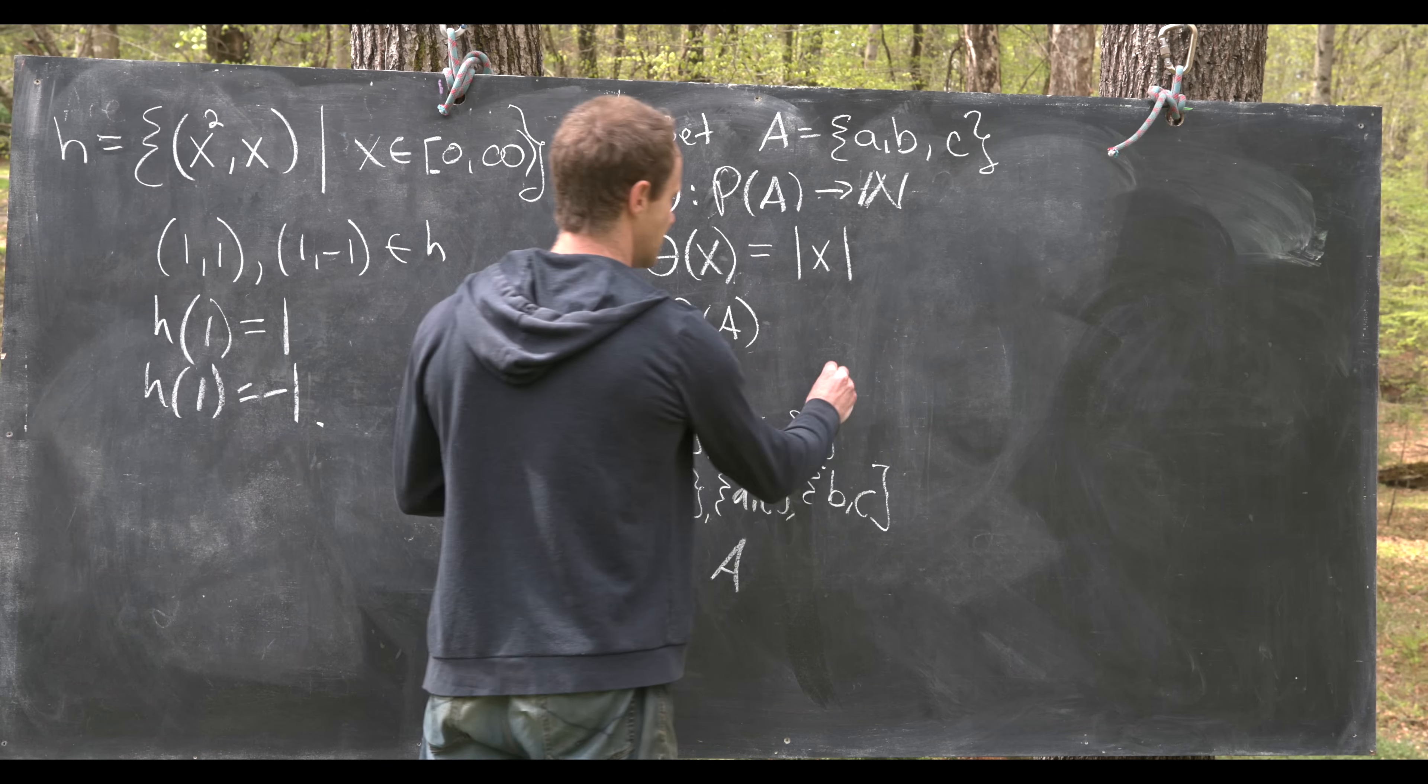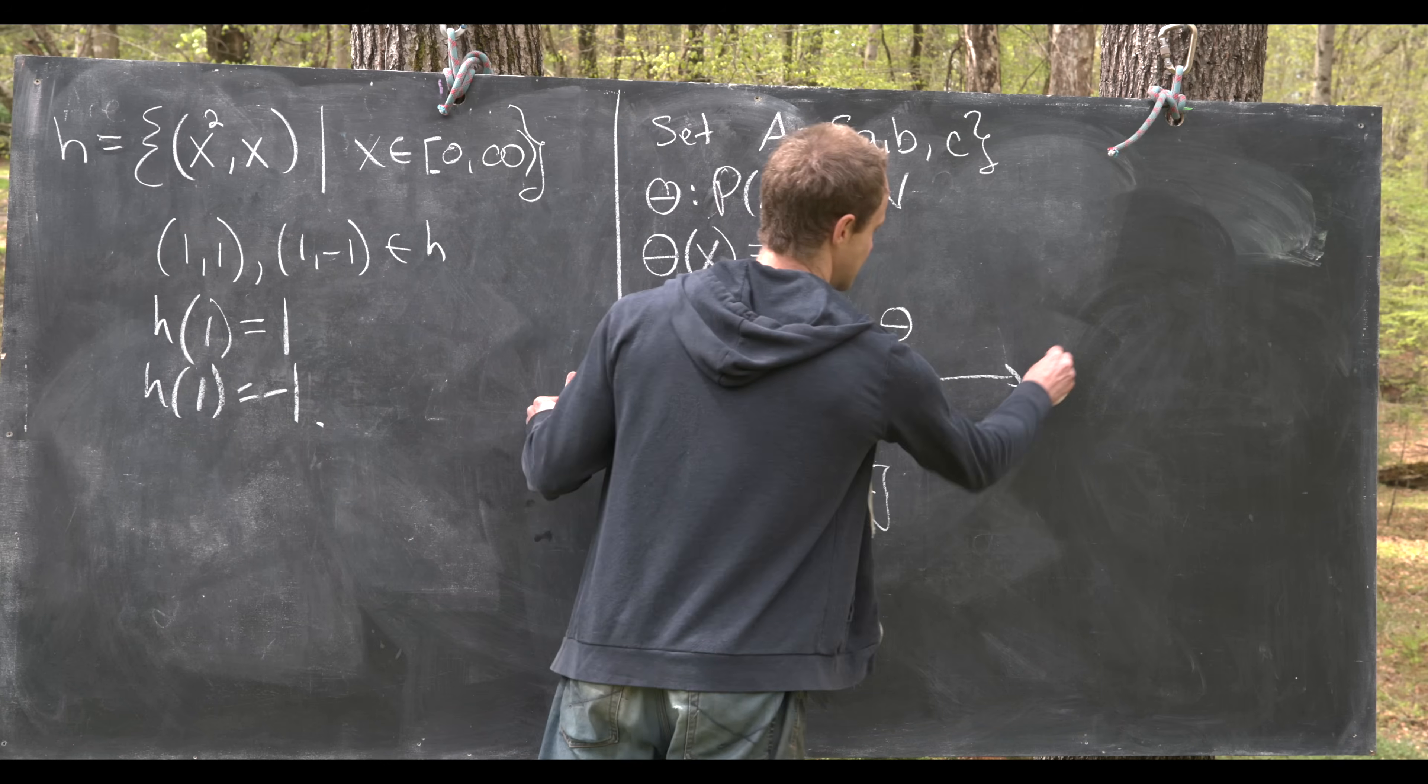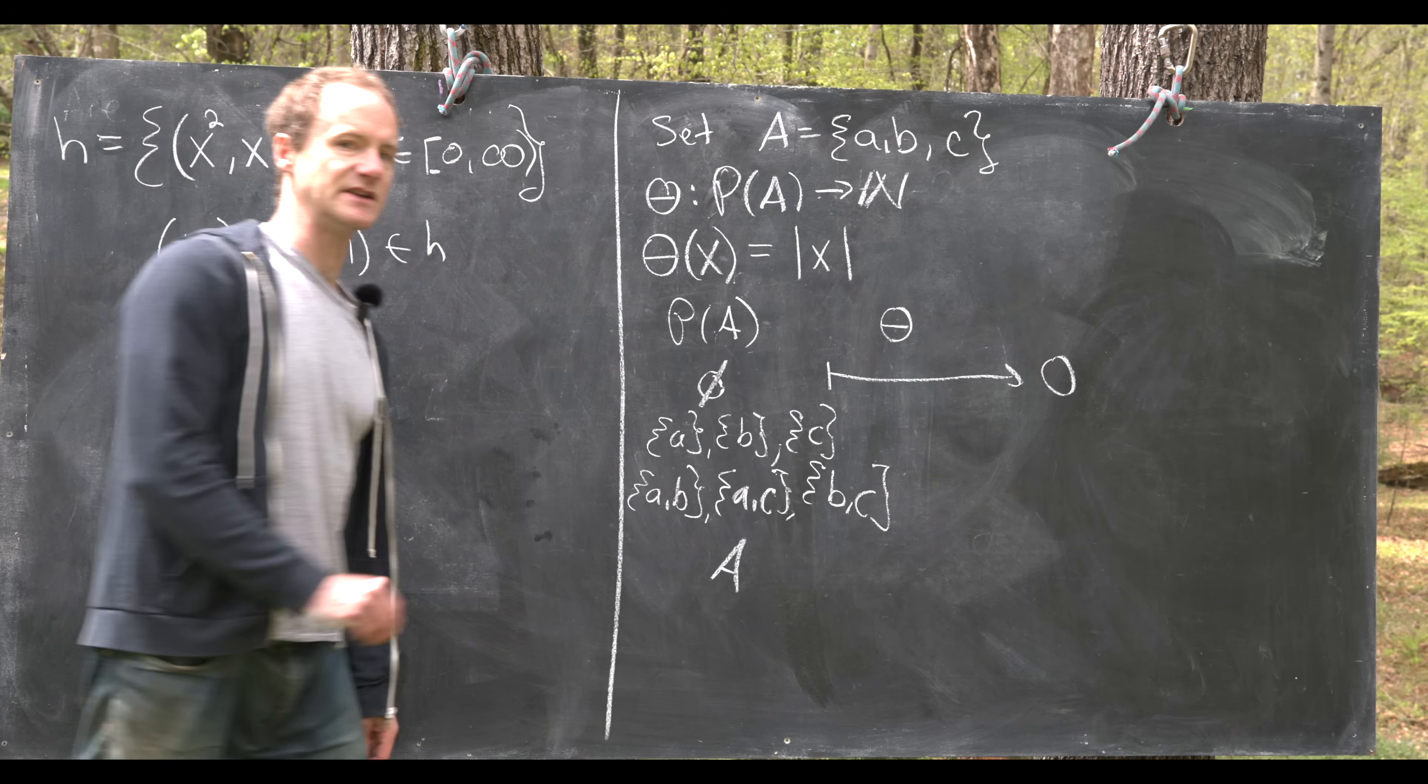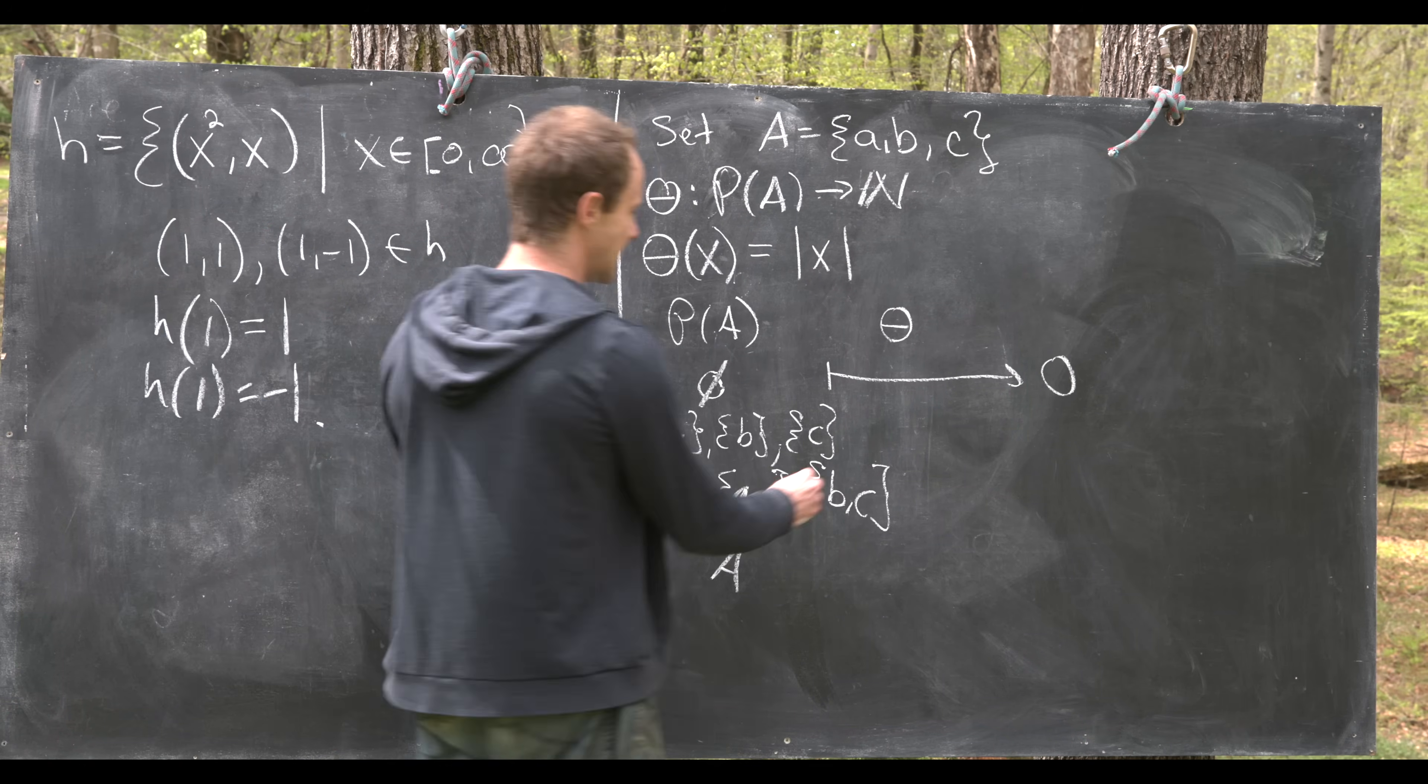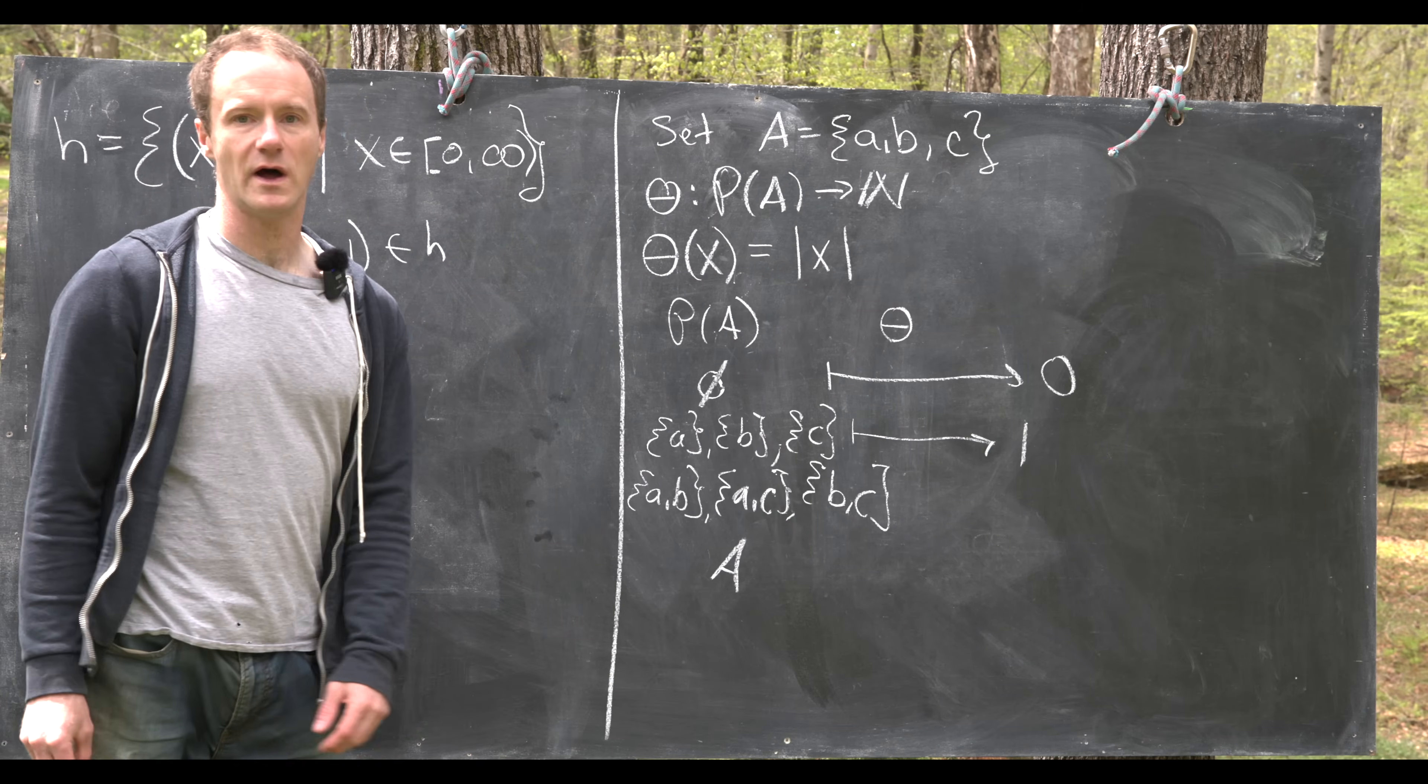And now notice under this map θ will take the empty set to zero because it has zero elements. It takes each of these singletons to one because they all have one element.